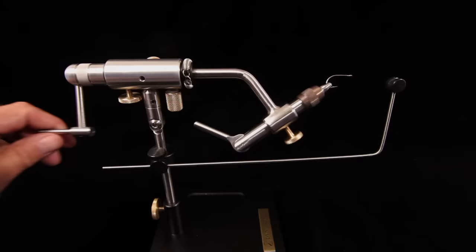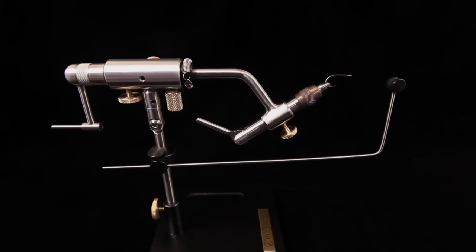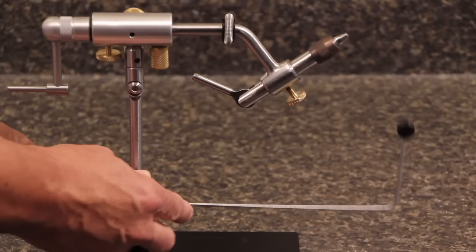The bobbin hanger can be swung into position to support the thread when you begin a rotary tying procedure. The unique bobbin mount allows the bobbin hanger to be moved into nearly any position imaginable.